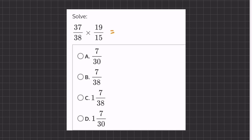So, if we use this commutative property, we can take this 38 and 15, the two denominators, and switch them. Now, let's see why this can help us. We have 37 over 15, after we switched, times 19 over 38.